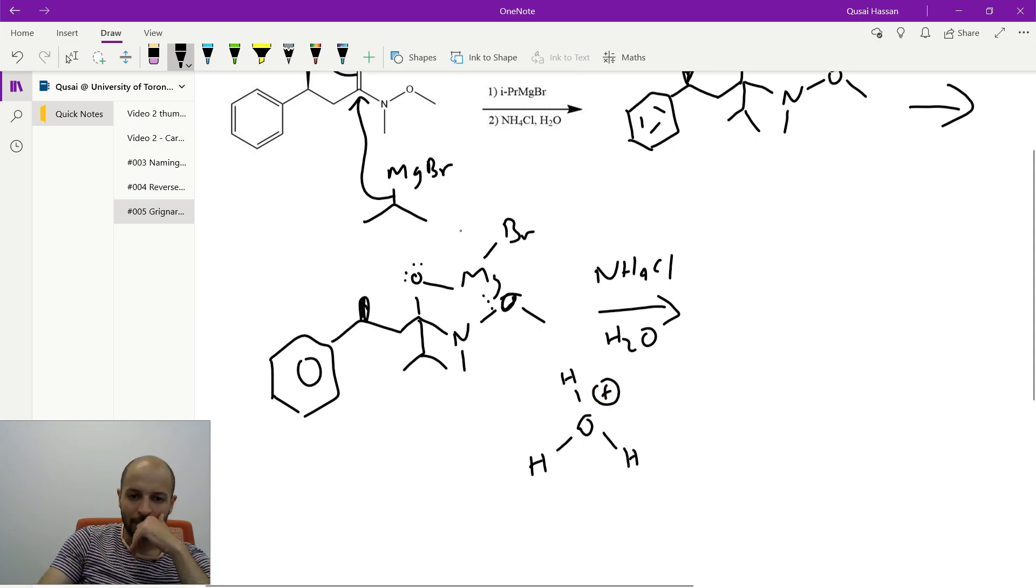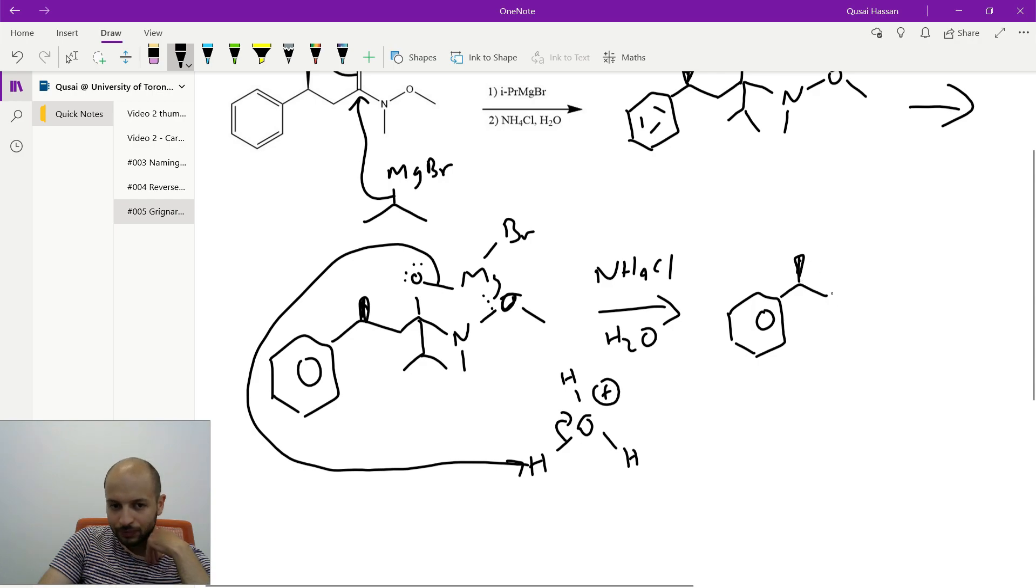Now, what's going to happen is the electrons on the oxygen are actually going to be more attracted to this proton, and so the magnesium breaks off, and what you end up getting is this here, you have your hydroxyl group, you have your isopropyl from the Grignard, and you still have this group here. And so what happens is, first off, because you're in acidic media, these guys can come down, and this is going to leave now, because it's not stuck to the magnesium bromide anymore.